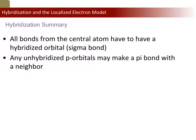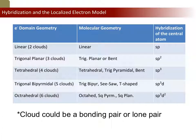To finish off this video lesson with some summarization: first, all bonds to the central atom have to use a hybridized orbital — any single bond to a central atom is a sigma bond through a hybridized orbital. Any unhybridized P orbitals can make pi bonds with a neighboring element as long as that neighbor also has unhybridized P orbitals. On the AP test, you'll really be asked to describe the hybridization of the central atom in a molecule. What you do is look at the domain geometry — the domain geometry tells you the hybridization, not the other way around. You determine the domain geometry first, then determine the hybridization.